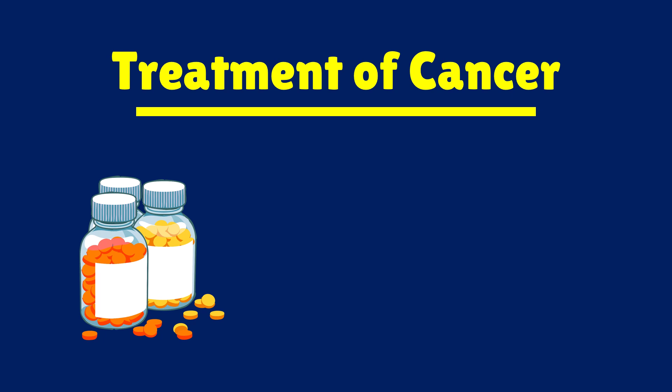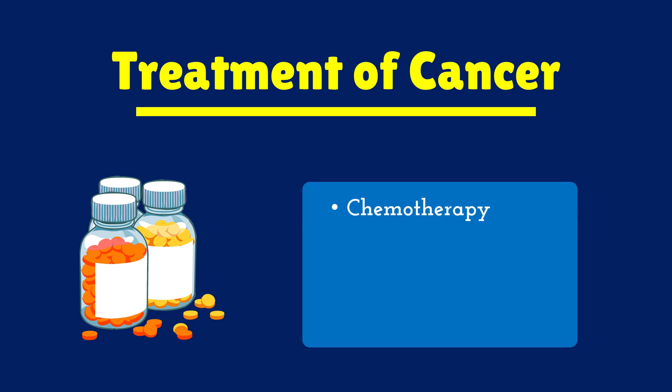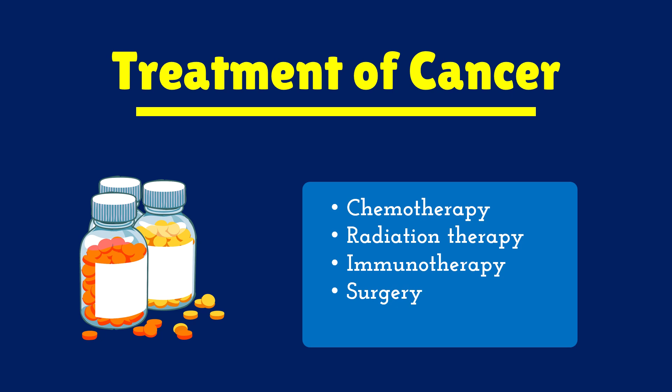Treatment of cancer: first, chemotherapy, where certain chemicals or drugs are given to treat the cancer cells. Radiation therapy uses radiation to destroy cancer cells so they cannot spread. Immunotherapy uses certain antibodies to specifically target and destroy cancer cells. Surgery can be used to remove the cancerous part to prevent spreading. Hormonal therapy can also be given in order to treat certain cancers.